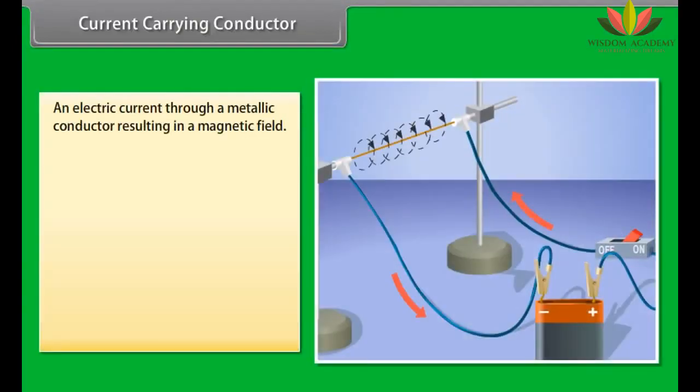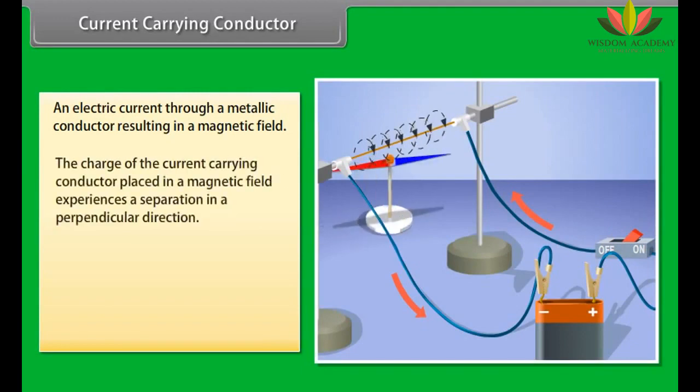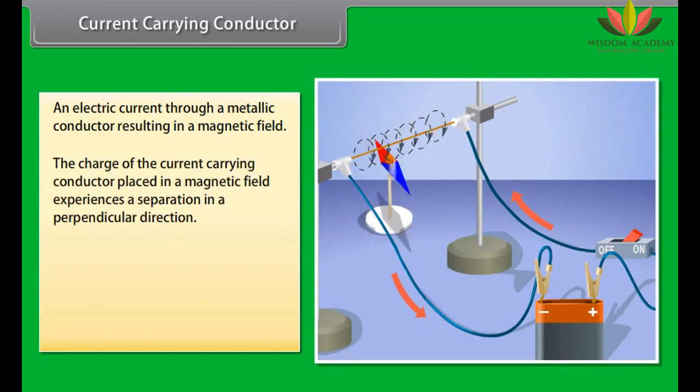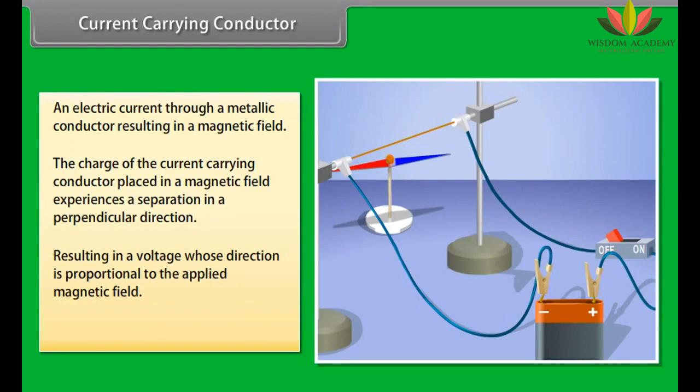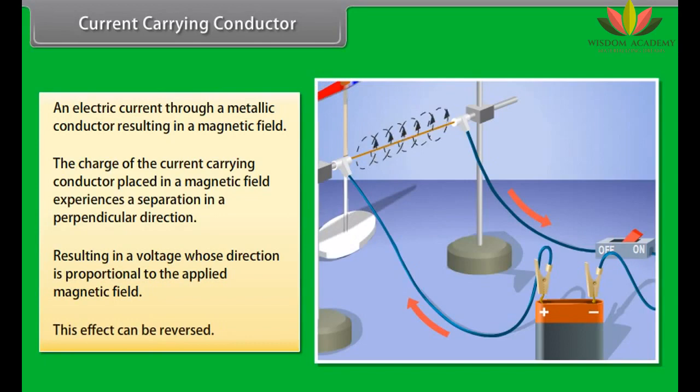Current carrying conductor. An electric current passing through a metallic conductor results in a magnetic field being created around it. The charge of the current carrying conductor placed in a magnetic field experiences a separation in a direction that is perpendicular to the current and the magnetic field. This results in a voltage whose direction is proportional to the applied magnetic field. This effect can also be reversed.